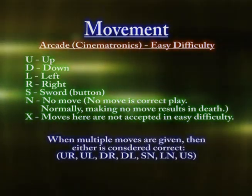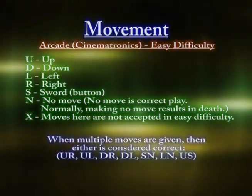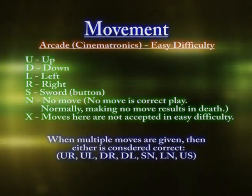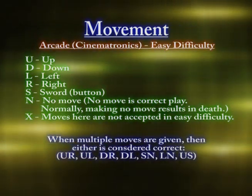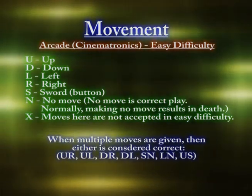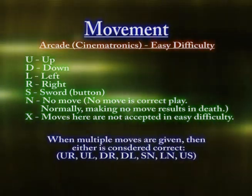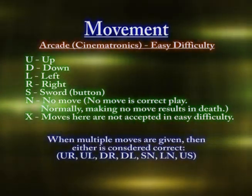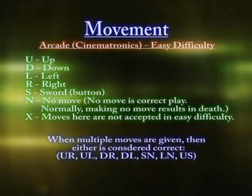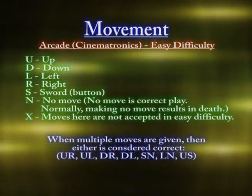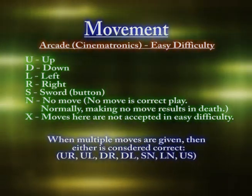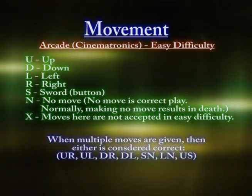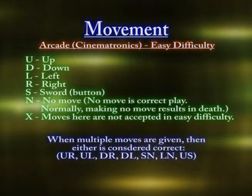Sometimes I give multiple moves, like U R or U L. What these are is that multiple moves are correct. For example, U R means up or right is correct; U L means up or left is correct; U S means up or sword is correct. So on some moves in some places, you can do more than one thing. Most of the time, like up and right, you can do diagonal and it'll be good, though there are times where diagonal doesn't work.